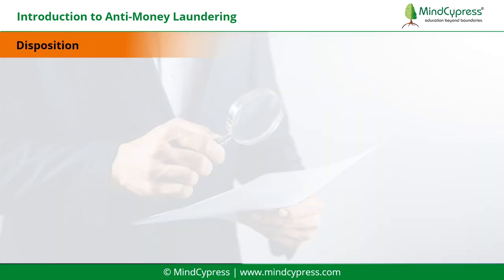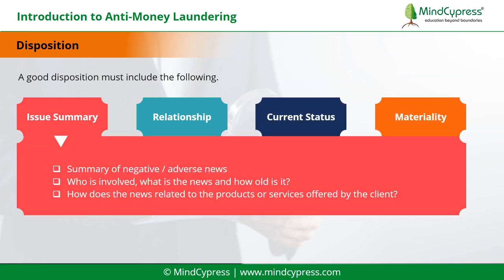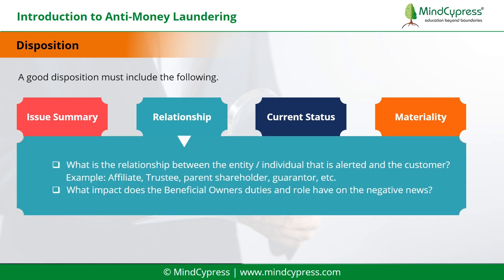Let's understand disposition. A good disposition must include the following: issue summary, relationship, current status, and materiality. The summary of negative or adverse news should cover: who is involved, what is the news, and how old is it? How does the news relate to the products or services offered by the client?